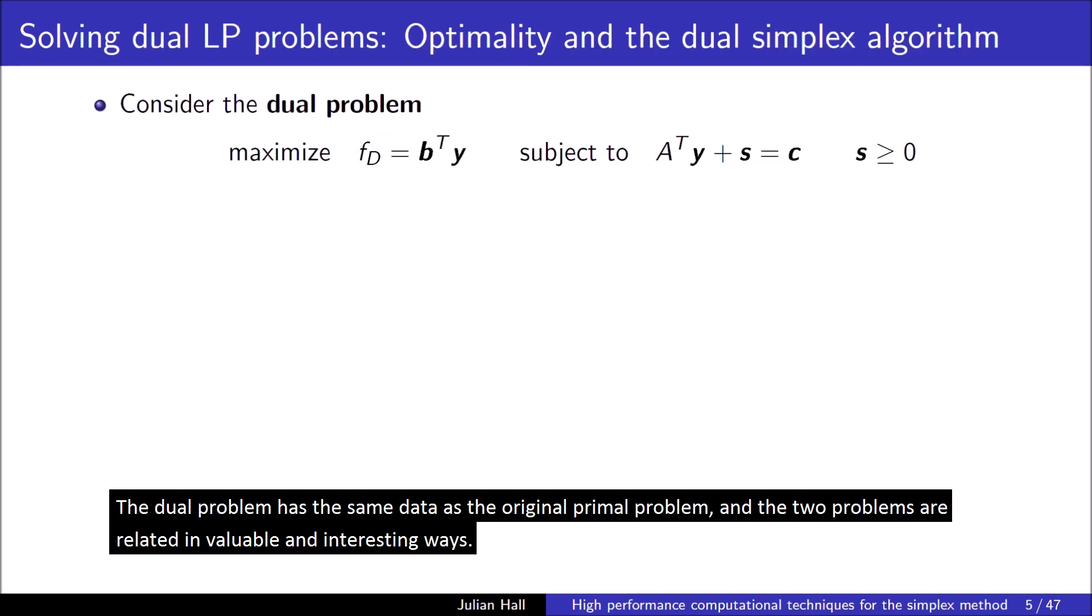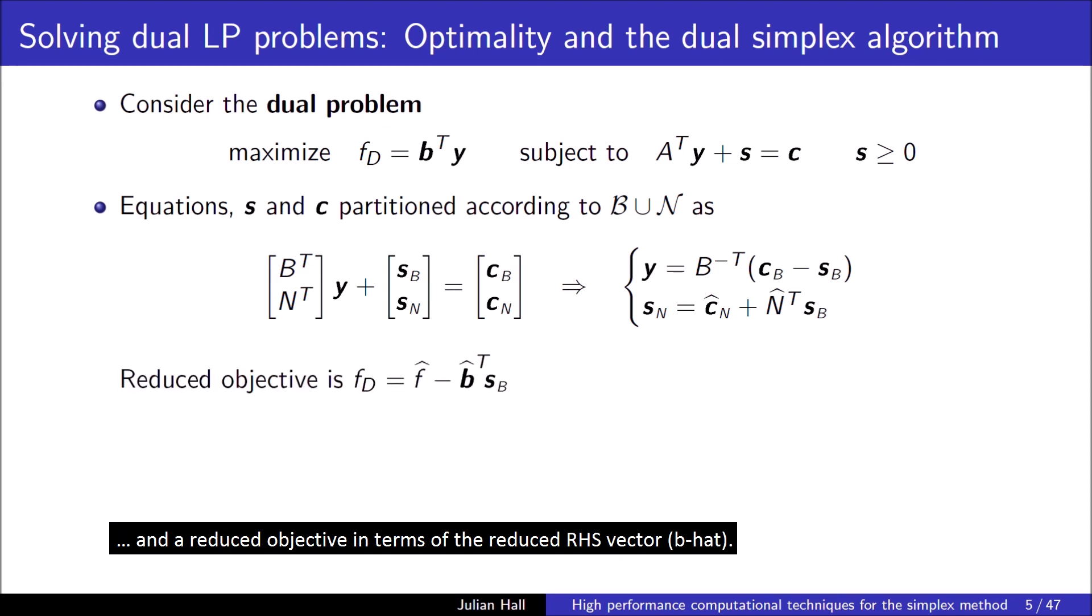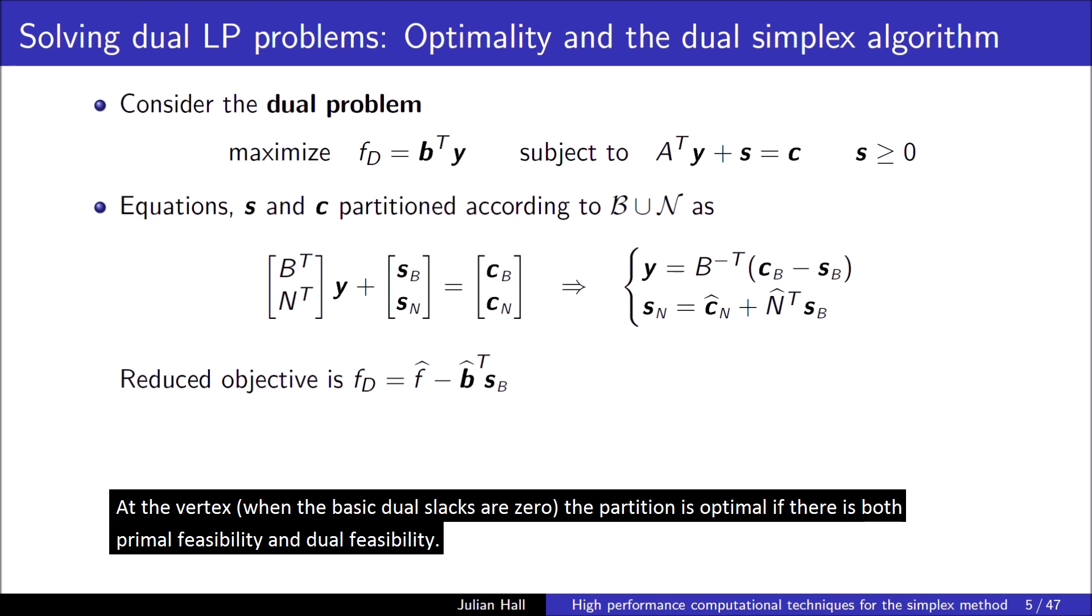The dual problem has the same data as the original primal problem, and the two problems are related in valuable and interesting ways. Partitioning the equations, S and C, yields solutions in terms of the basic dual slacks, and a reduced objective in terms of the reduced right-hand side vector, B hat. At the vertex, when the basic dual slacks are zero, the partition is optimal if there is both primal feasibility and dual feasibility.